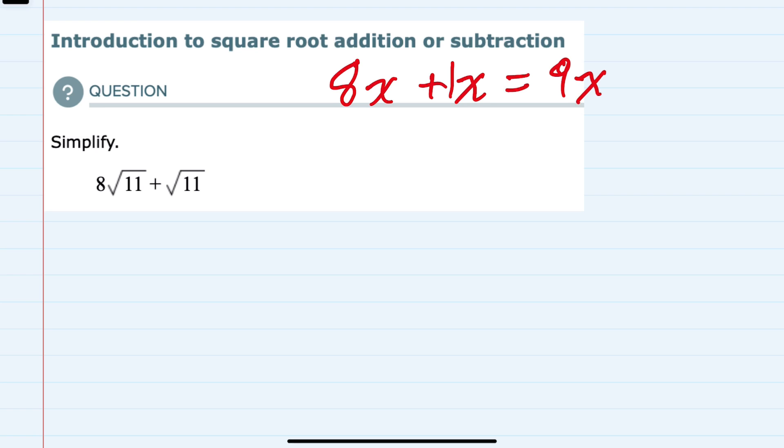since we have the same radical, the square root of 11, we started off with 8 square roots of 11 and we add a single square root of 11. Then we can combine those to now have 9 total square roots of 11. So as long as the radicals are the same, we can add or subtract the coefficients that are outside of the radical to simplify the expression.